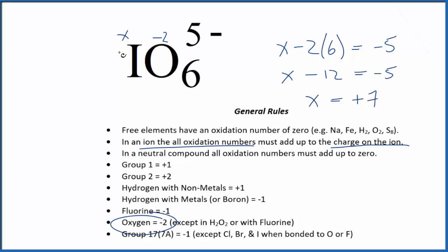So that's going to be the oxidation state here for the iodine in IO₆⁵⁻. If we add plus 7 to 6 times minus 2, that's going to equal 5-.